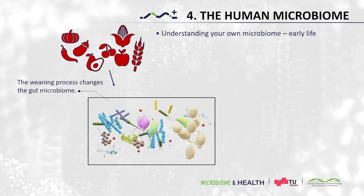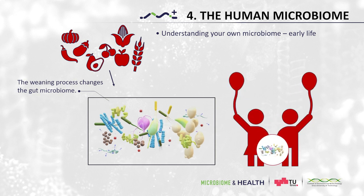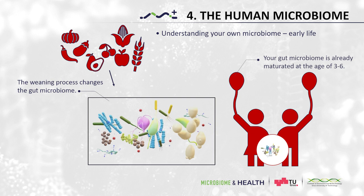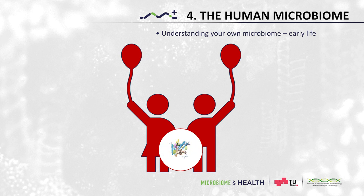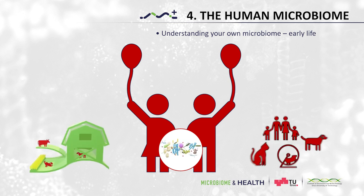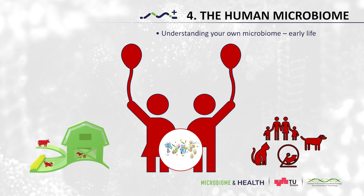Your gut microbiome is already matured and reaches an adult stage within the age of three to six years. This indicates that the first years of your life are determining for health in later life. Apart from your diet, during early childhood many other environmental factors determine a healthy microbiome. Studies on large cohorts showed that contact to farm animals, pets and siblings represent factors directly related to a healthy microbiome and a healthy kid, with lower risk to develop allergies, obesity and respiratory tract diseases such as asthma.